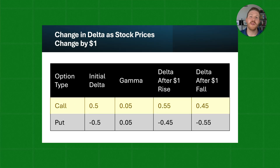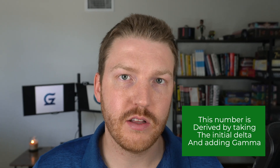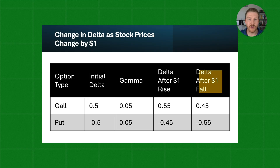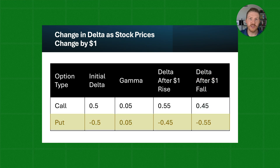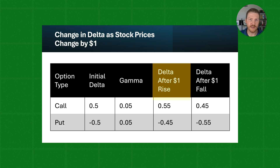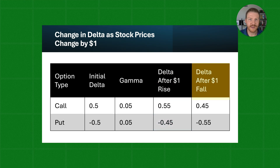On the top row, we have a call option with an initial delta of 0.5 and a gamma of 0.05. When the stock price rises by $1, the new delta value is 0.55 — derived by taking the initial delta and adding the gamma. However, if the stock price falls, we subtract the gamma from the initial delta and end up with a value of 0.45. Whereas with the put option, the initial delta is negative 0.5 and the gamma is still 0.05. When the stock price rises $1, we add the 0.05 gamma to the initial delta and it becomes less negative, at negative 0.45. Whereas if the stock price falls, we subtract the gamma and the delta becomes even more negative at negative 0.55.